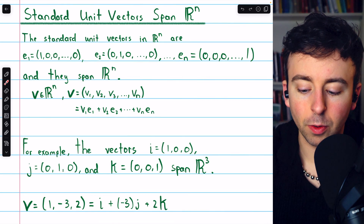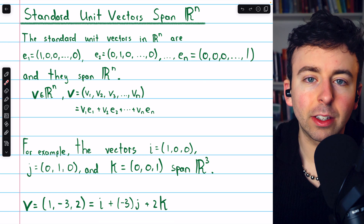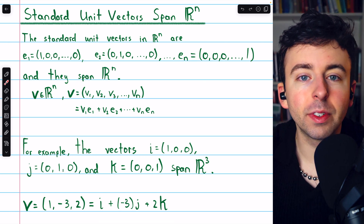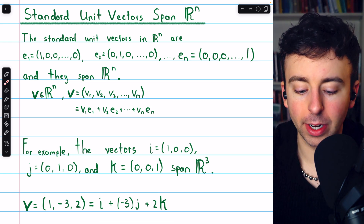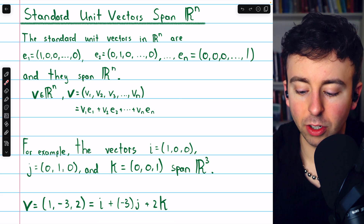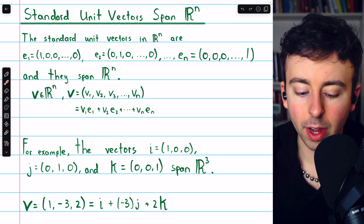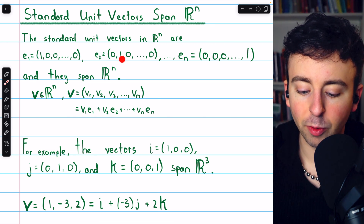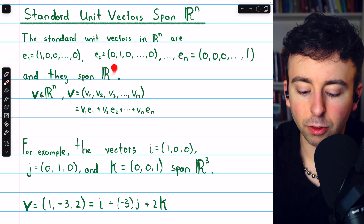The standard unit vectors in Rn span Rn. The unit vector Ei is the vector containing zeros in all of its components except for a one in the ith component. These vectors are typically denoted E1, E2, up through En. E1 is all zeros except for a one in its first component, E2 is all zeros except for a one in its second component, and so on. These vectors span Rn.